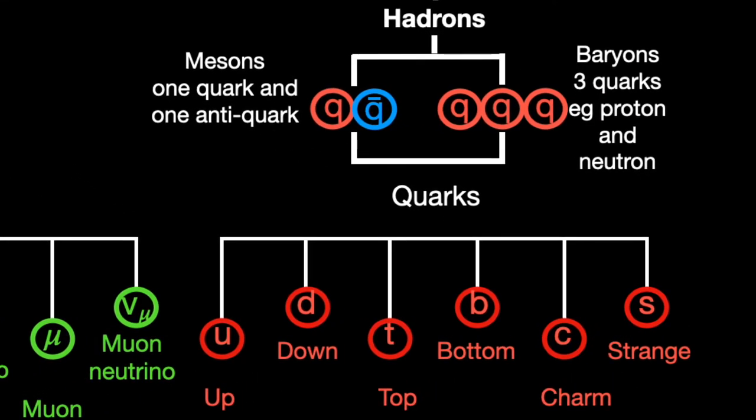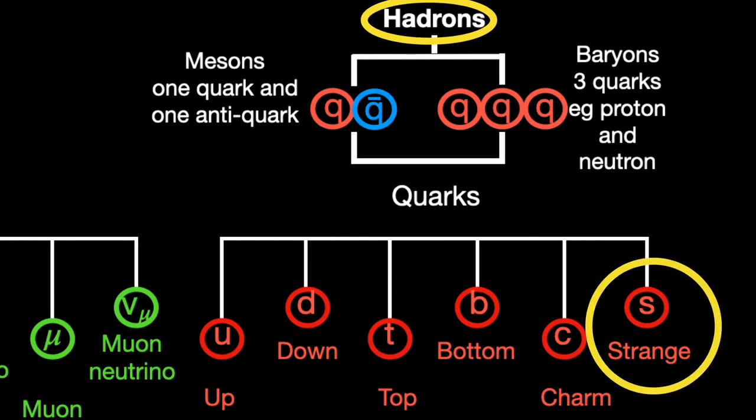If they contain three quarks, they are baryons and two, they are mesons. Strange quarks are similar to down quarks. They have a minus one third charge, but they do have a greater mass.